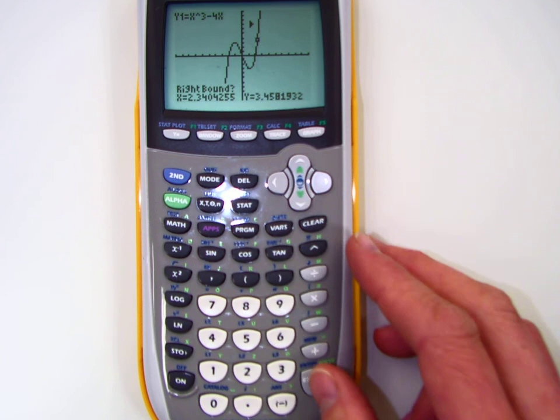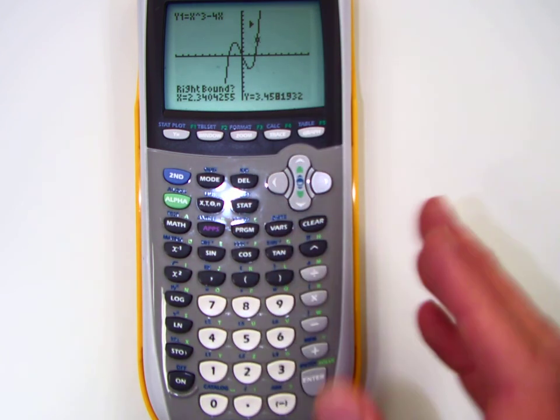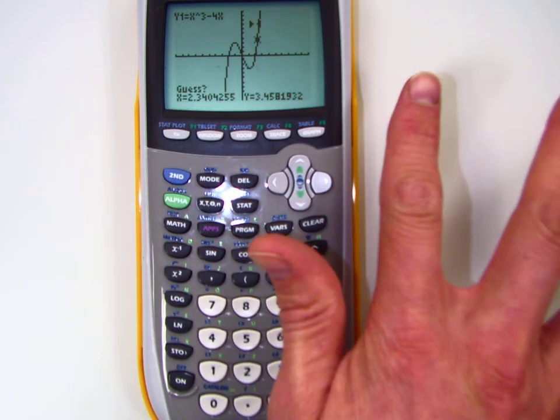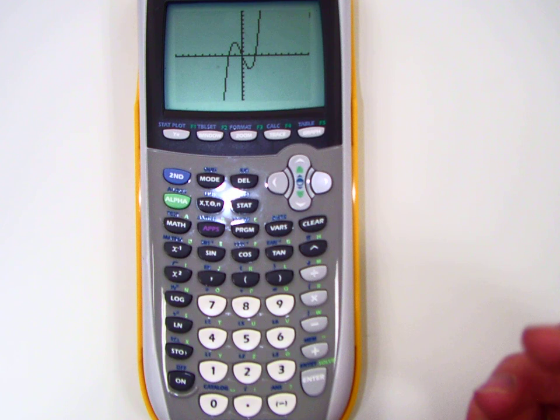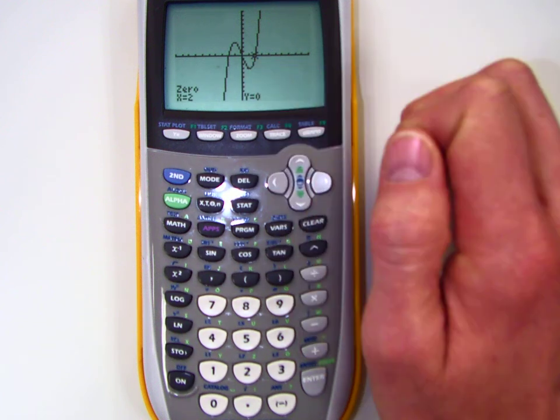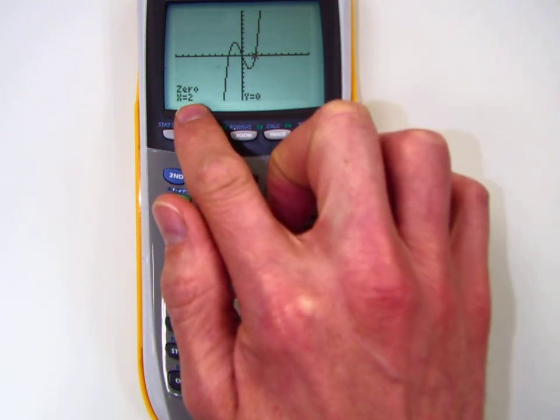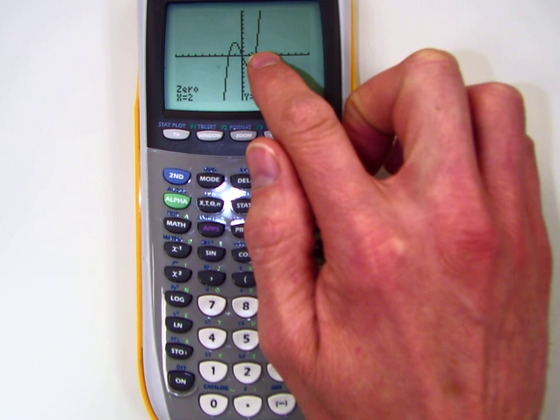So it says left bound, so I hit boom, and I go across, right bound, on the right side or on the other side, from left to right, and then I hit guess, and now see how it's flashing right there on the x-axis, which is the zero? It's telling me the zero is two, so that crosses at two.